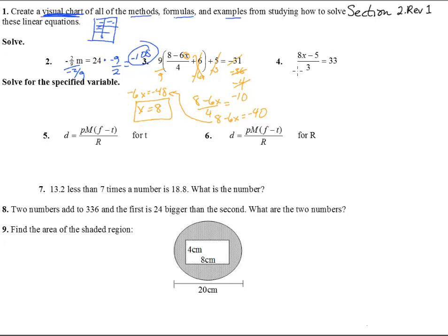Here, get rid of that denominator, times both sides by 3. And we get 8x minus 5 equals 99. Add 5 to both sides, we get 8x equals 104. Divide by 8, divide by 8, and we get x equals 13.